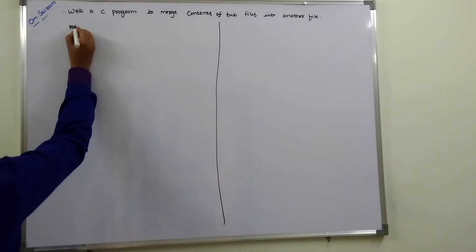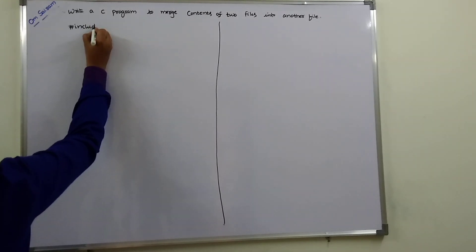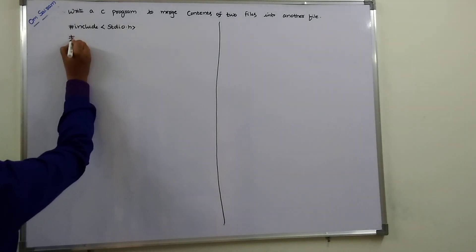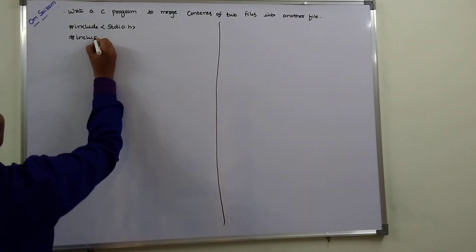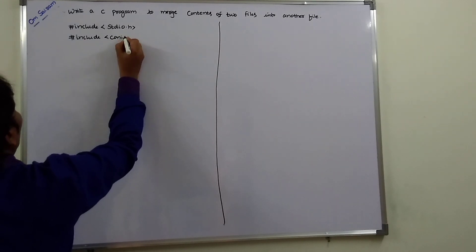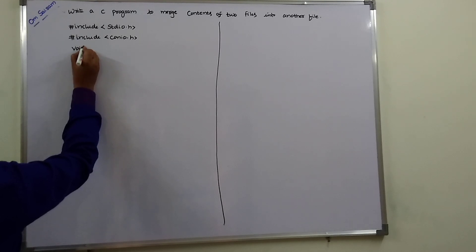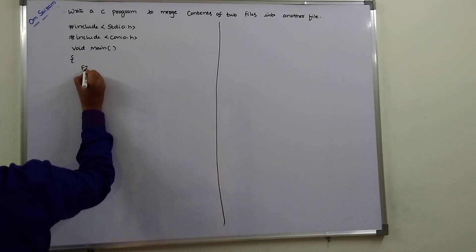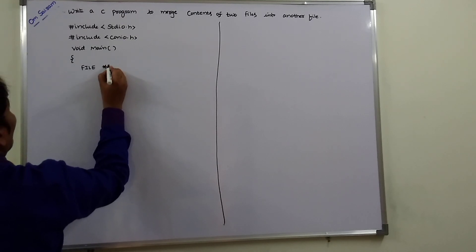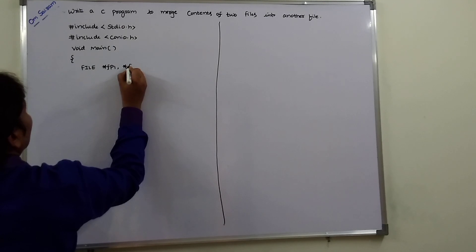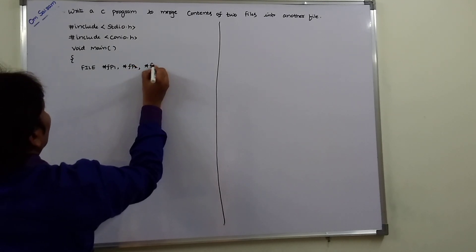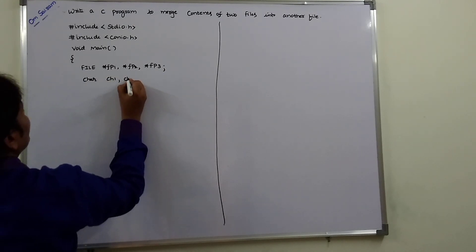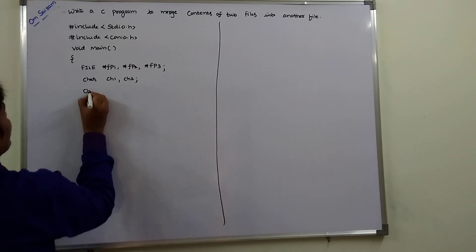The program starts with hash include stdio.h and hash include conio.h. Then void main, with a FILE pointer declaration: fp1, fp2, fp3, and character variables ch1 and ch2. clrscr is called here.